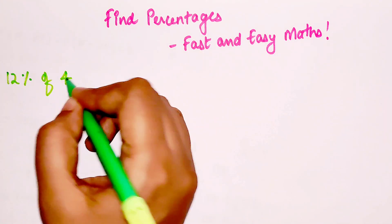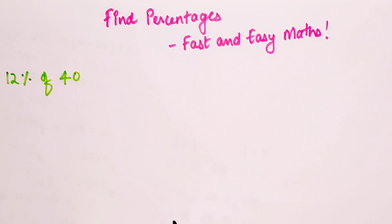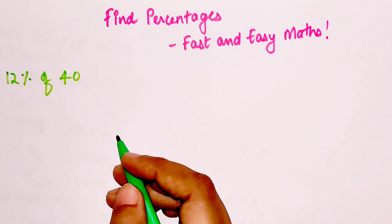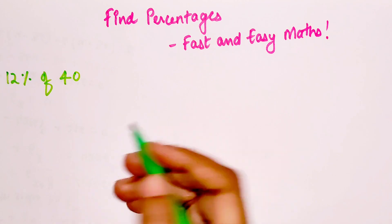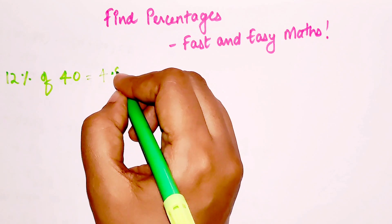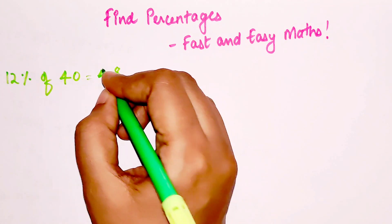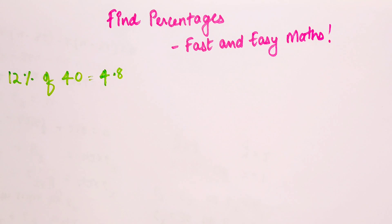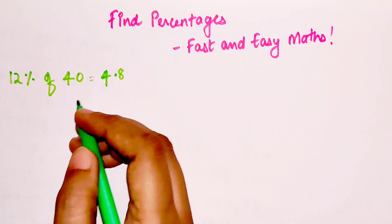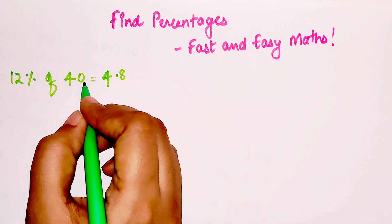Let's try with something like this: 12% of 40. What will be the value of that? Just take a moment and see if you can find the answer. So if you found the answer as 4.8, then bingo, you are absolutely correct.